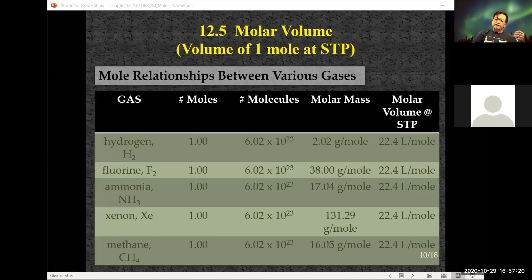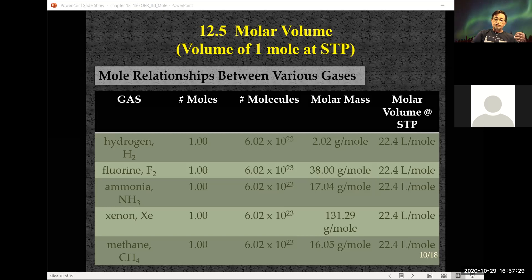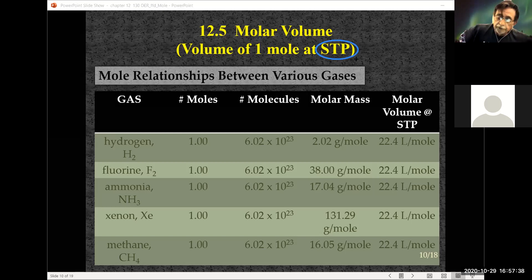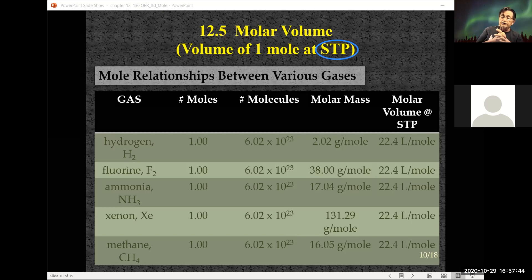Under special conditions called STP — standard temperature and pressure — special rules apply. STP means standard temperature of zero degrees Celsius and pressure of one atmosphere. We are approximately one atmosphere here.